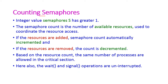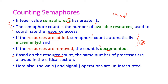Counting semaphore. In counting semaphore, the semaphore S value will be more than 1 — the semaphore count is the number of available resources, used to coordinate resource access. If S value is 4, that means 4 resources are there and 4 processes are allowed to access those resources. If resources are added, the semaphore S value will automatically be incremented; if a resource is removed, the S value should also be decremented. Based on the resource count, the same number of processes are allowed in the critical section. Here also, the wait and signal operations are uninterrupted — only one process can change the value of S at a time.